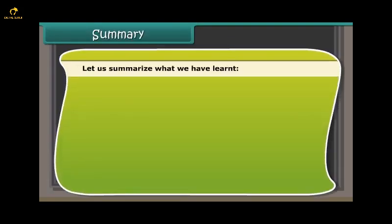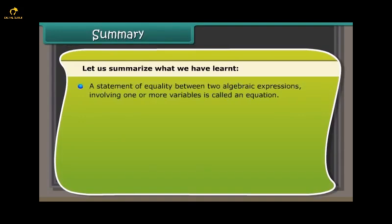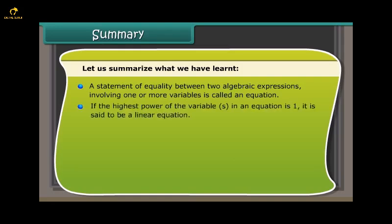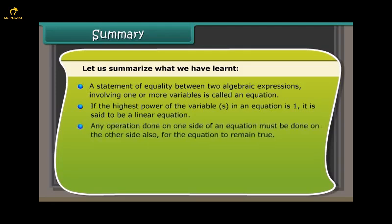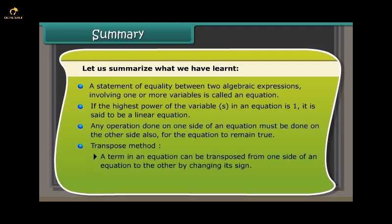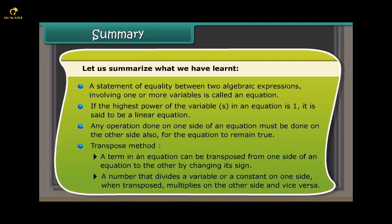Summary: A statement of equality between two algebraic expressions involving one or more variables is called an equation. If the highest power of the variables is 1, it is a linear equation. Any operation done on one side must be done on the other side. In the transpose method, a term changes sign when moved across the equals sign, and a dividing number becomes a multiplying number when transposed.